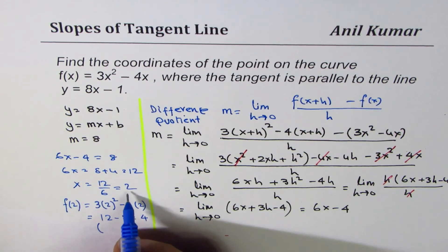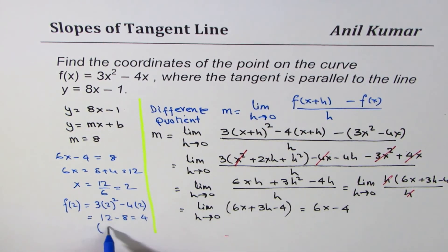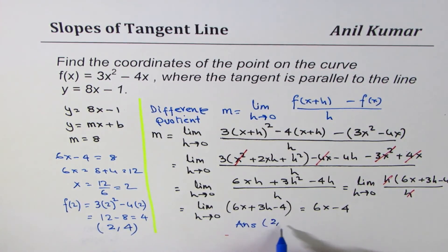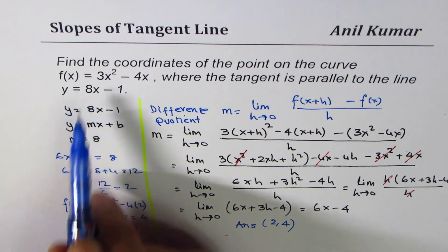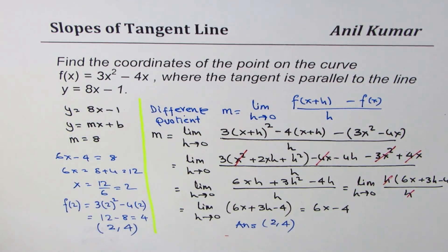So we get the answer: at x = 2, the slope of the tangent on the given function will be parallel to the line y = 8x - 1. I hope with this you understand this strategy to find the answer. Thanks for watching.